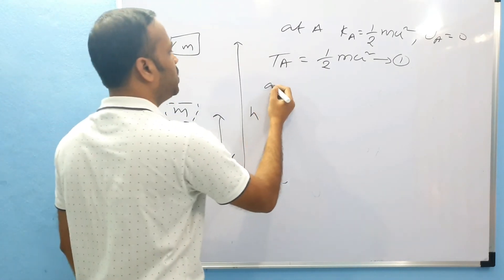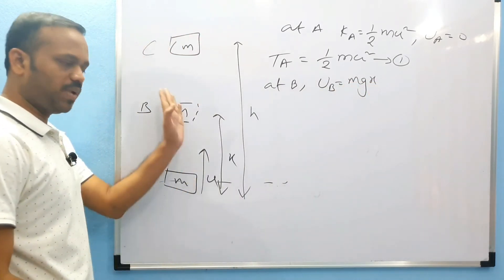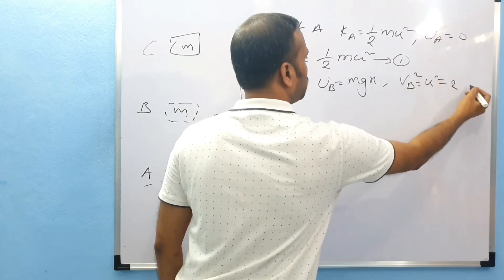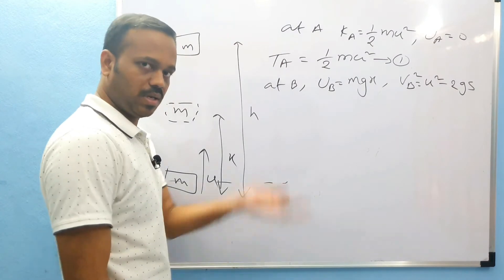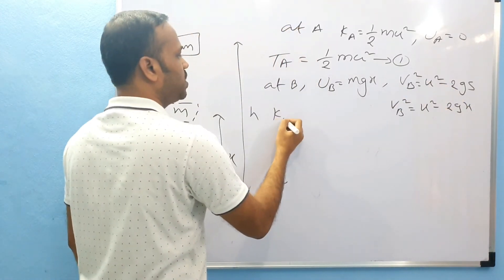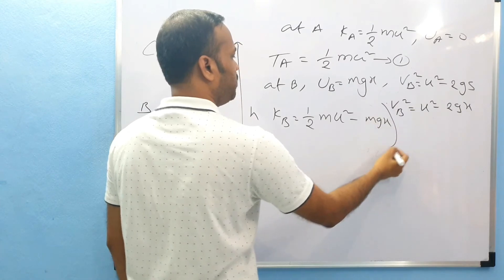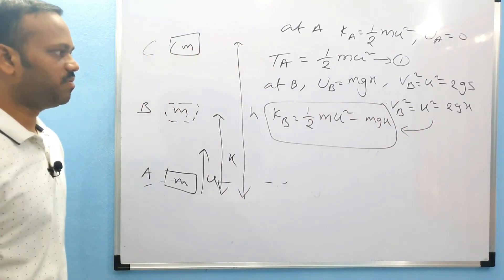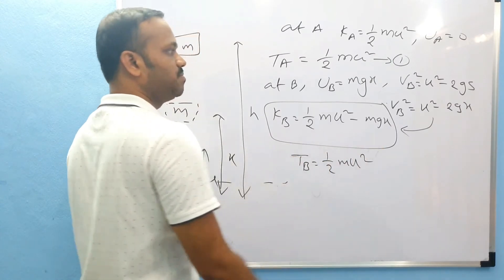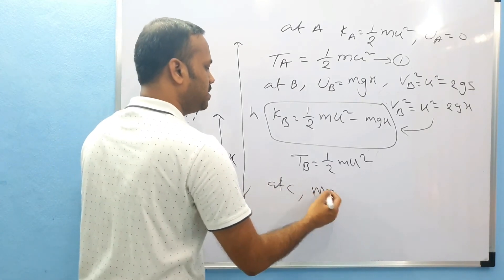At point B, x distance up, UB will be mgx. For KB, using the formula for vertical projection: u squared minus vB squared equals 2gs, so vB squared equals u squared minus 2gx. Therefore KB equals half m(u squared minus 2gx), which equals half mu squared minus mgx. Total energy at B equals UB plus KB equals mgx plus half mu squared minus mgx, which gives half mu squared.